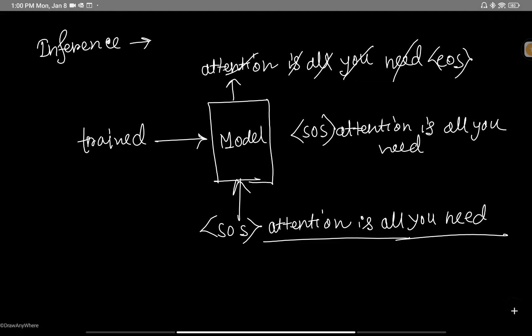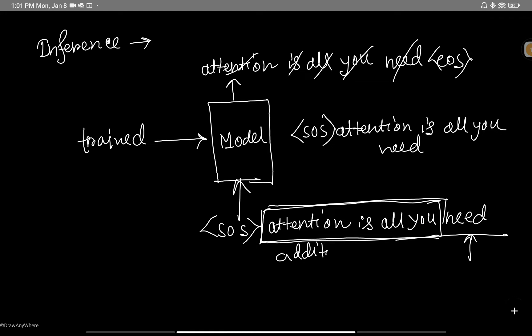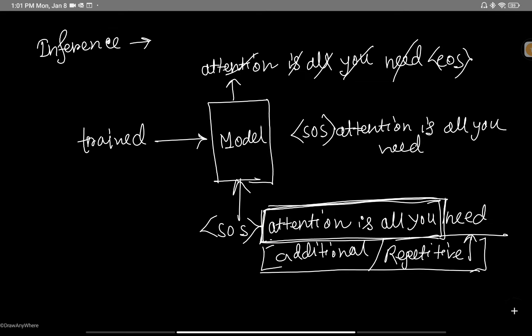You can see there is a lot of repetition of tasks. At the last step, to produce 'need,' we also feed all the previously generated tokens to the model to enhance context. But this introduces additional complexity — it's a repetitive task. So can we cache this part which we have already computed? This token generation is already done, so we don't need to feed it again and again.